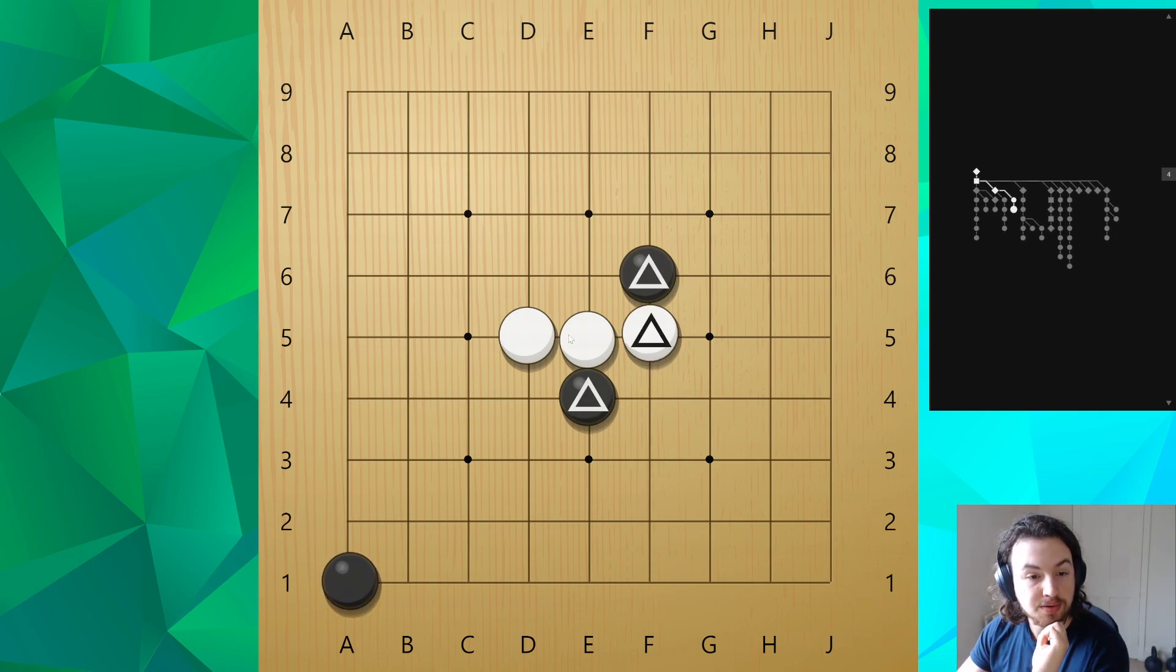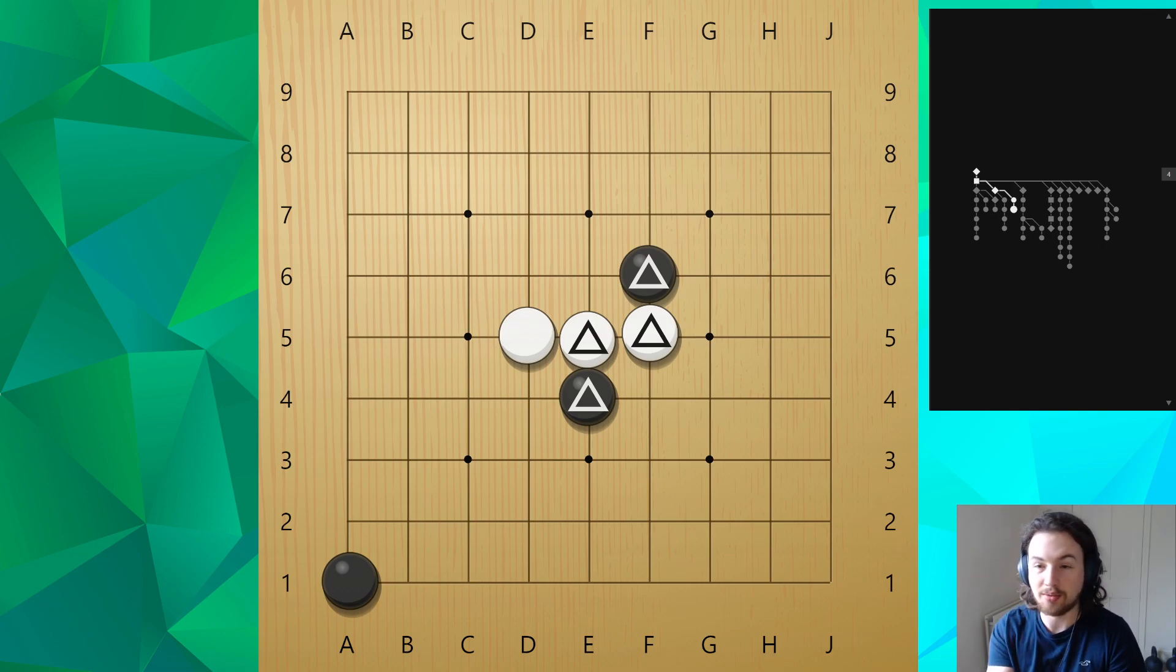So this is also textbook broken shape and even when I'm reviewing games of people who aren't complete beginners, say double digit kyu or something, I need to teach them this broken shape and to avoid it. This is not good shape and it'd be good if you started avoiding it or looking for it in your games right away.